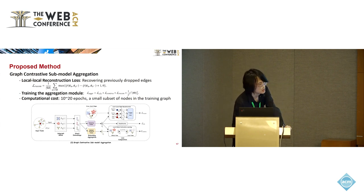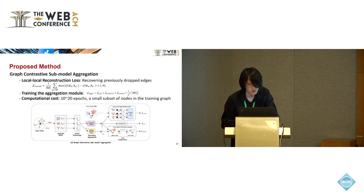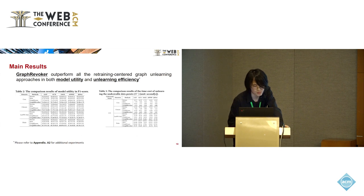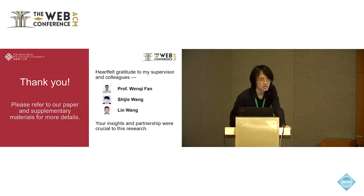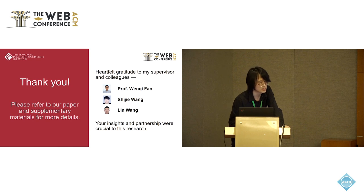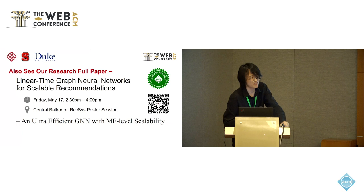The sub-model aggregation module can be trained in only 10 to 20 epochs using a small subset of nodes in the training graph. Our proposed system, Graph Revoker, outperforms all retraining-centered graph unlearning approaches in both model utility and unlearning efficiency. This is the end of my presentation. Please refer to our paper and supplementary materials for more details. I would also like to thank my supervisor Professor Wen Qifan and two colleagues in our research group — with all their insights and partnership, it would have been impossible for me to finish this work.